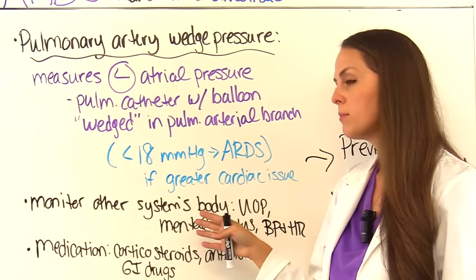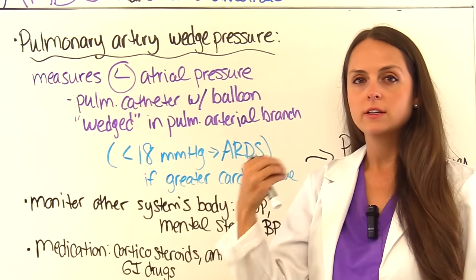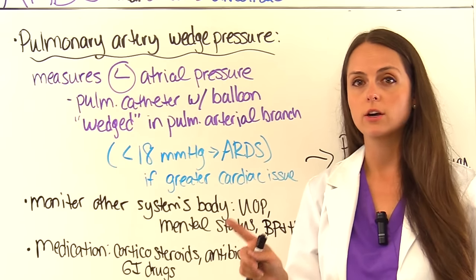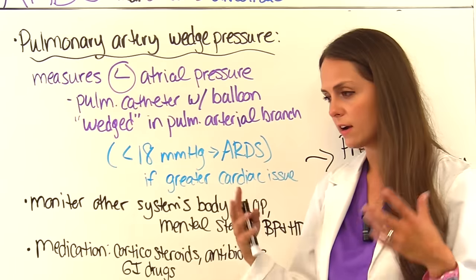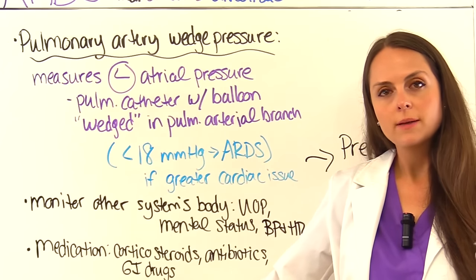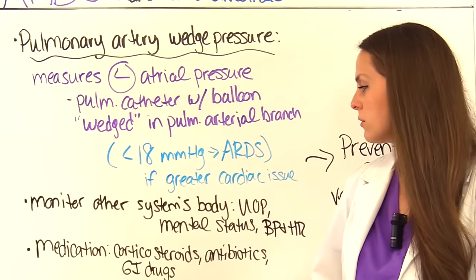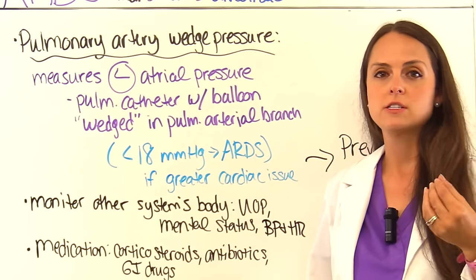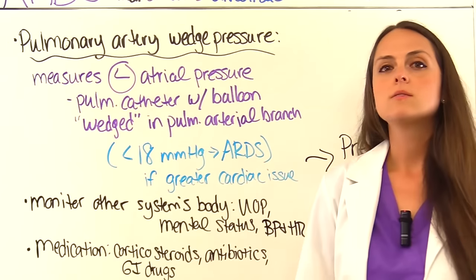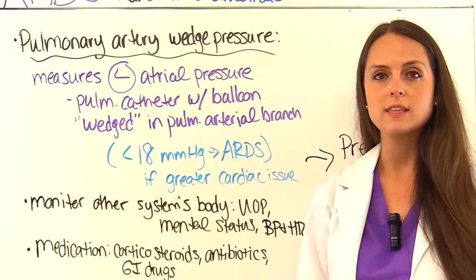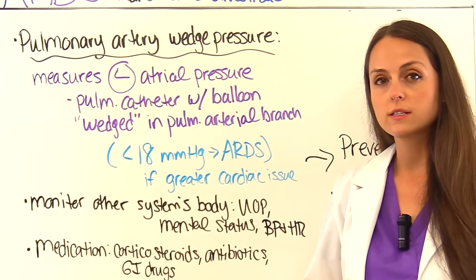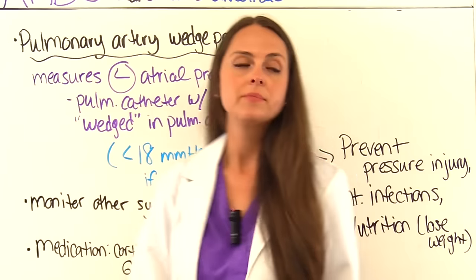As a nurse, monitor other body systems to ensure adequate perfusion. For renal function, watch urinary output — poor output signals kidney problems. Monitor mental status for confusion or fatigue indicating poor brain perfusion. Track blood pressure and heart rate. Medications may include corticosteroids to reduce systemic inflammation (a major cause of ARDS), antibiotics if the patient has sepsis, and GI drugs to prevent stress ulcers.